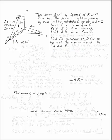The beam ABC is loaded at B with a force FB, and it's held in place by two cables, one that goes from A to D and one that goes from A to E. I want to know what the moments are at O due to the force FB and the tensions in each of the cables.